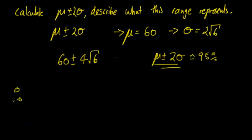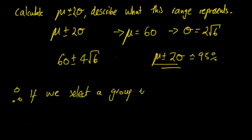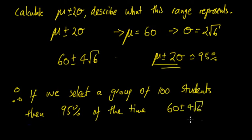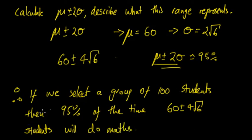Applying this to the question: if we select a group of 100 students, then 95% of the time the number of students who do math will fall within the range of 60 ± 4√6, or approximately 50 to 70 students. So if we select a group of 100 students, 95% of the time that range of students will do maths. It's quite important to remember that mean plus or minus 2 standard deviations is approximately 95%.